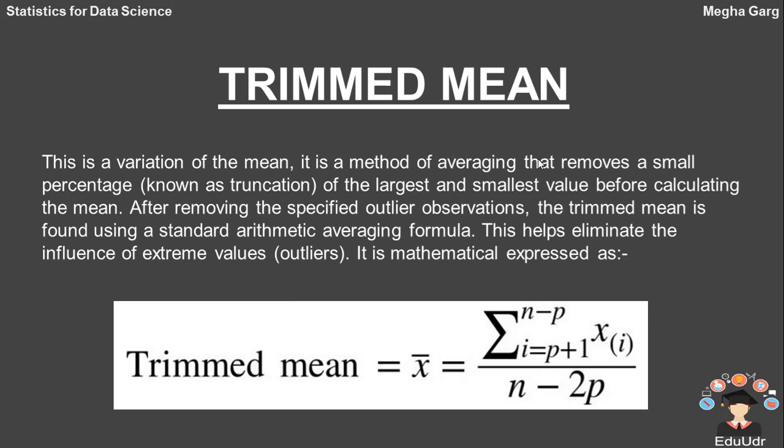Now, our second topic is trimmed mean. That is a type of mean or we can say this is a variation of the mean. It is a method of averaging that removes a small percentage known as truncation of the largest and smallest value before calculating the mean. For example, in international diving, the top and bottom scores from five judges are dropped and the final score is the average of three remaining judges.